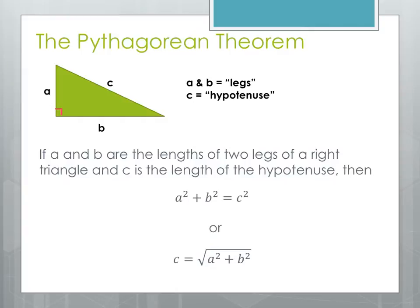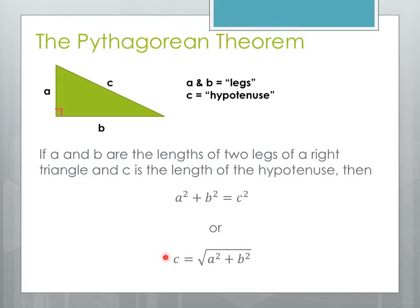The Pythagorean Theorem states that if A and B are the legs of the triangle and C is the hypotenuse, then these two formulas hold: A squared plus B squared equals C squared, or C equals the square root of A squared plus B squared. The first formula is useful for checking if a triangle is right or not, while the second is most efficient for calculating the unknown side. We'll be calculating for the hypotenuse only, so this simplified version will be most useful.